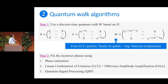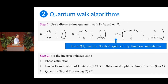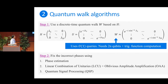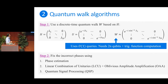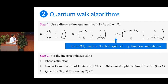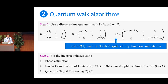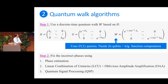Step two for both paradigms is fixing the wrong phases. There are three ways to do it. First, using phase estimation: you read off the phases, figure out what they should have been, and correct them. The other two approaches — which work in both paradigms — are LCU plus oblivious amplitude amplification (LCU+OAA) and quantum signal processing. These give better recombination methods and better query complexity than product formulas.